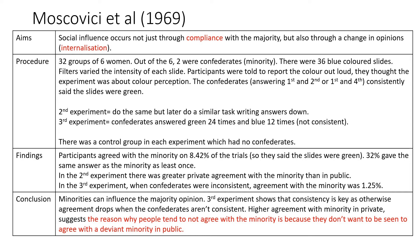The conclusions are that minorities can influence majority opinion. The third experiment shows that consistency is key - you could turn that into an evaluation point: there is research showing consistency is key, then cite Moscovici, as agreement drops when confederates aren't consistent. Higher agreement with the minority in private suggests the reason people tend not to agree with the minority publicly is because they don't want to be seen agreeing with a deviant minority. The private written answers showed people genuinely starting to believe the slides were green.